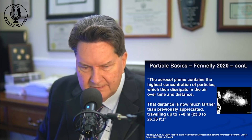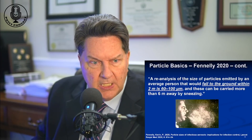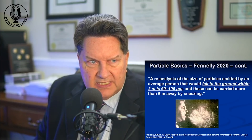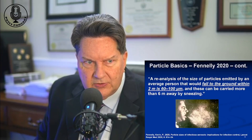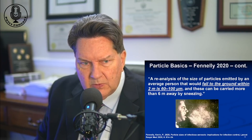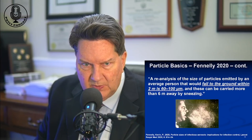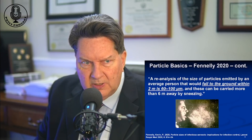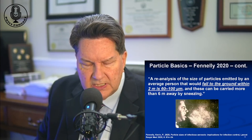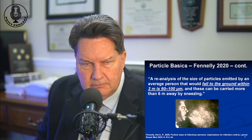I call them the dummy dots — that's my name for them. Fennerly says a reanalysis of the size of particles emitted by an average person that would fall to the ground at two meters is 60 to 100 microns — in other words, the really big guys. We're talking about droplets being about 10 microns and greater, whereas the aerosols, the little guys, are five microns or less.